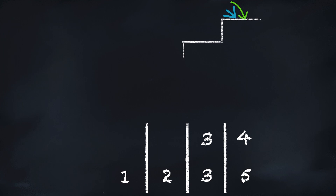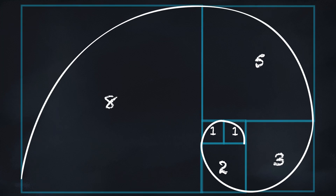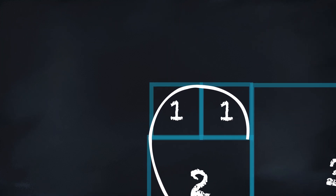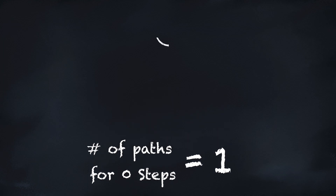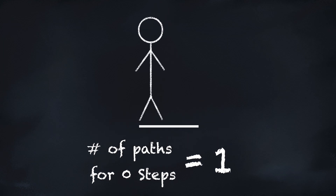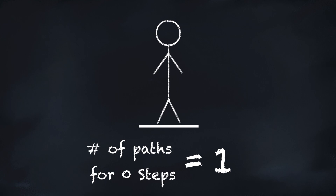You may recognize this as the Fibonacci sequence, if we define the number of ways to get to the zeroth stair as equal to one. This would physically mean that we have one way to not take any steps, which kind of makes sense too.